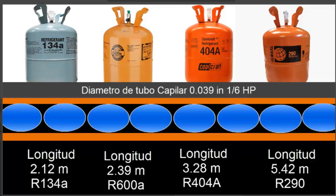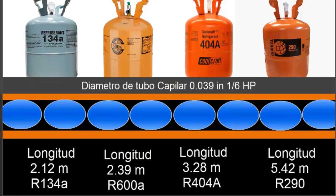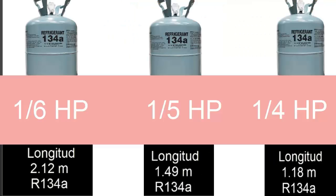It is important to mention that the ideal lengths for a capillary are those that are very close to 2 meters. Many times when the length goes well above that, the recommendation is to change the diameter of the capillary. Another important feature to observe is that the length of the capillary increases for each refrigerant as the HP of the compressor decreases.